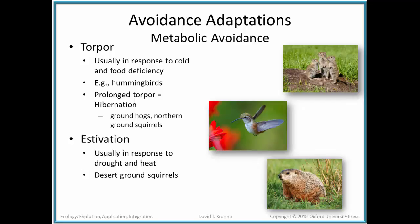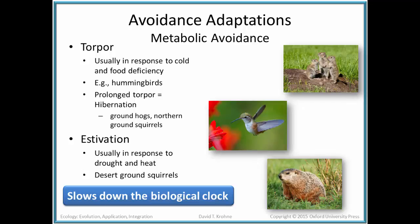Prolonged torpor is often referred to as either hibernation or estivation. Hibernation occurs in animals such as groundhogs and northern ground squirrels. Estivation is an extended torpor to avoid drought and heat conditions — occurring, for instance, in desert animals such as desert ground squirrels. The idea is to slow down the biological clock, slow down the metabolism, to avoid harsh conditions, be it cold temperature, food deficiency, or heat and drought.